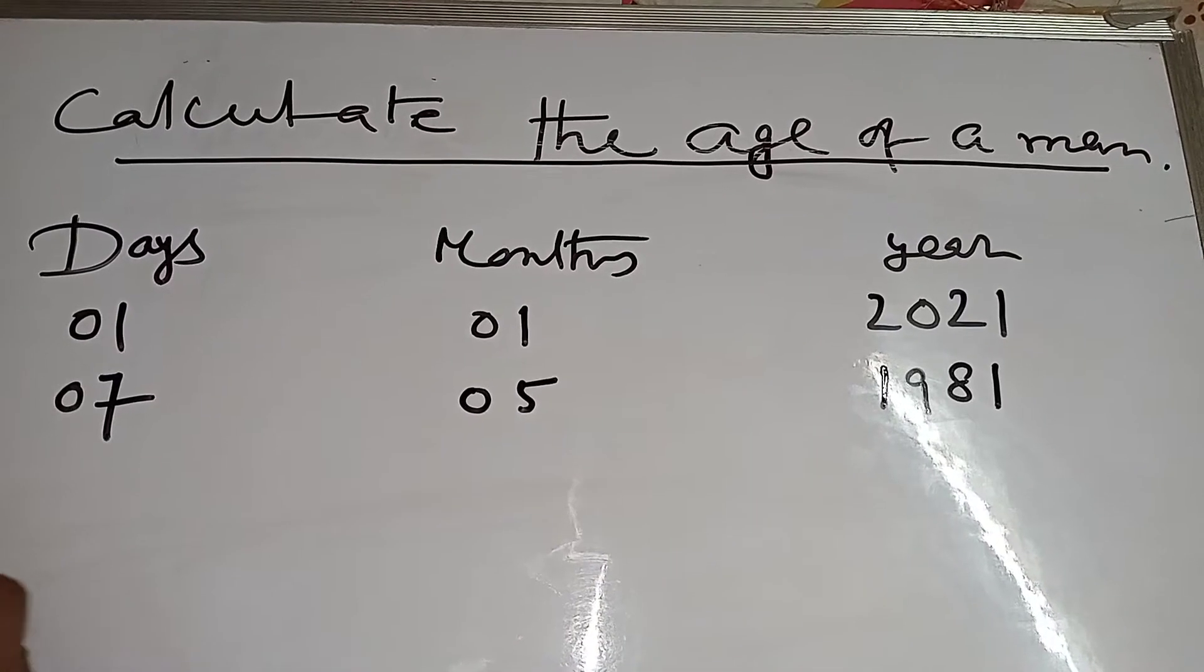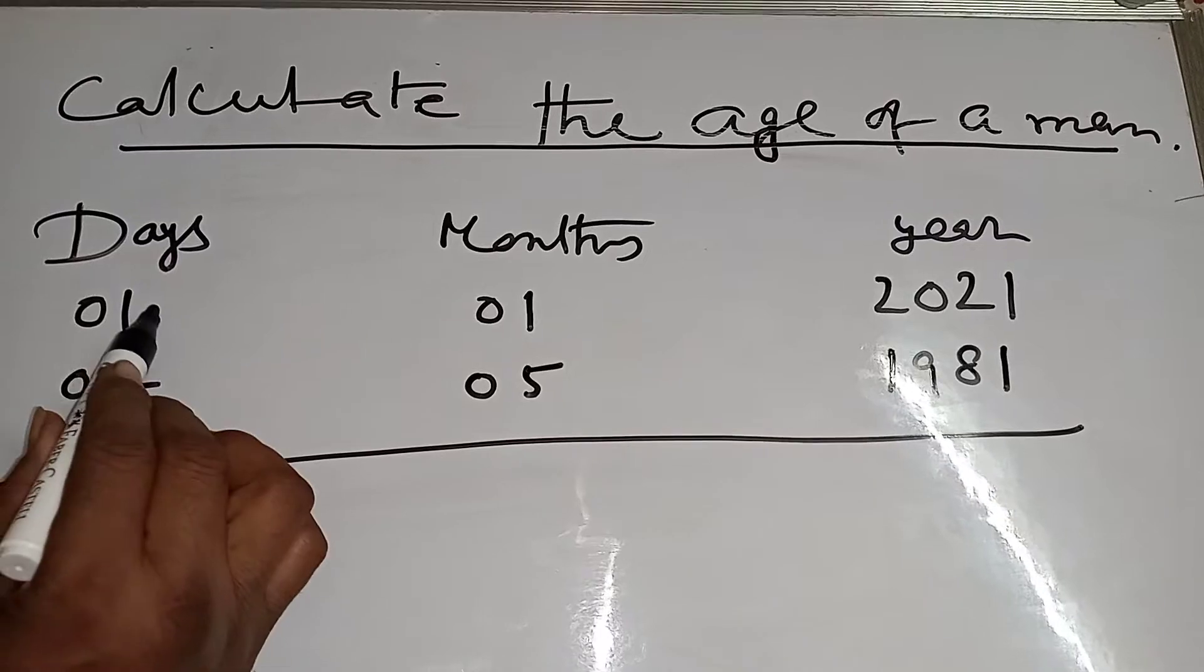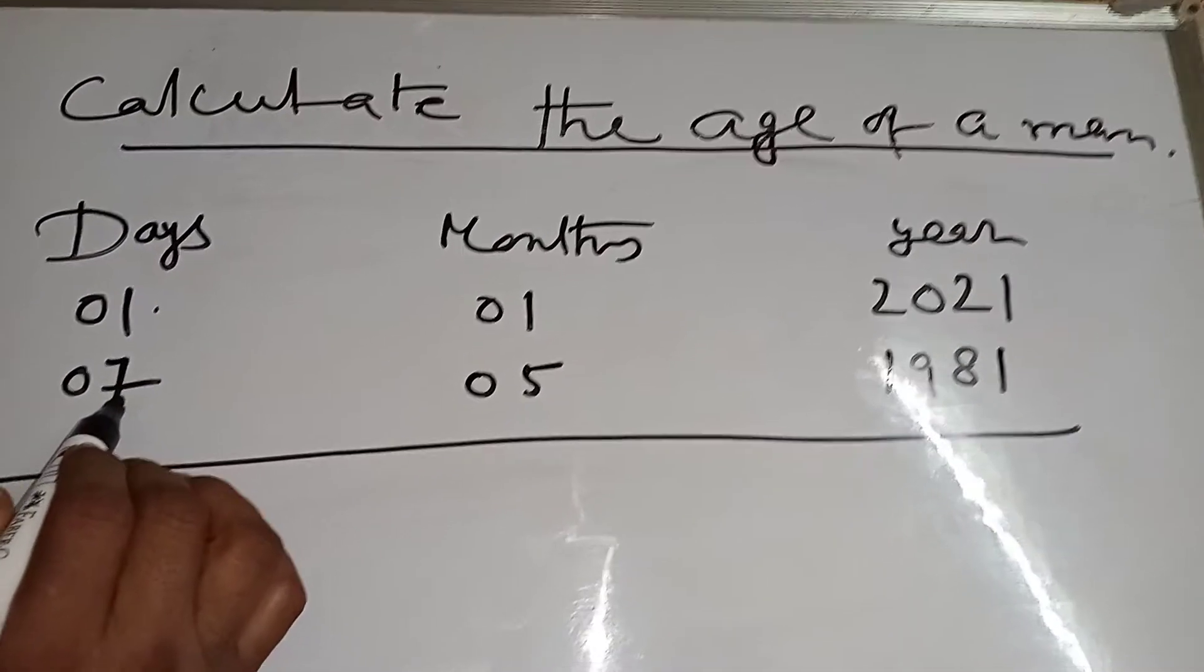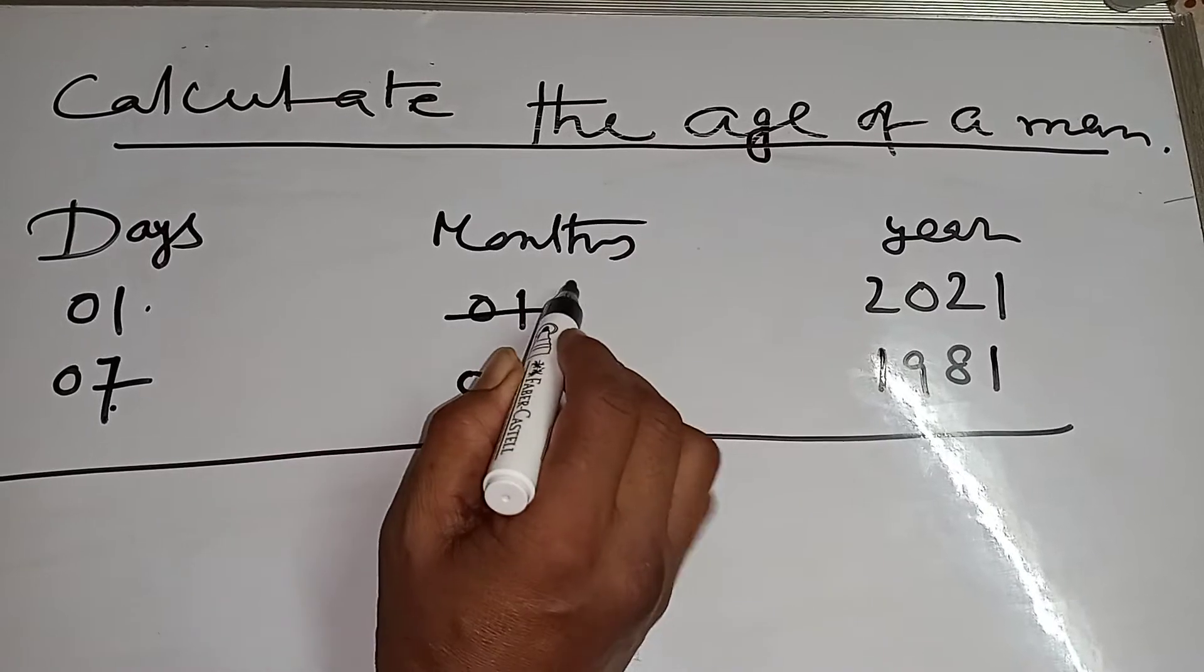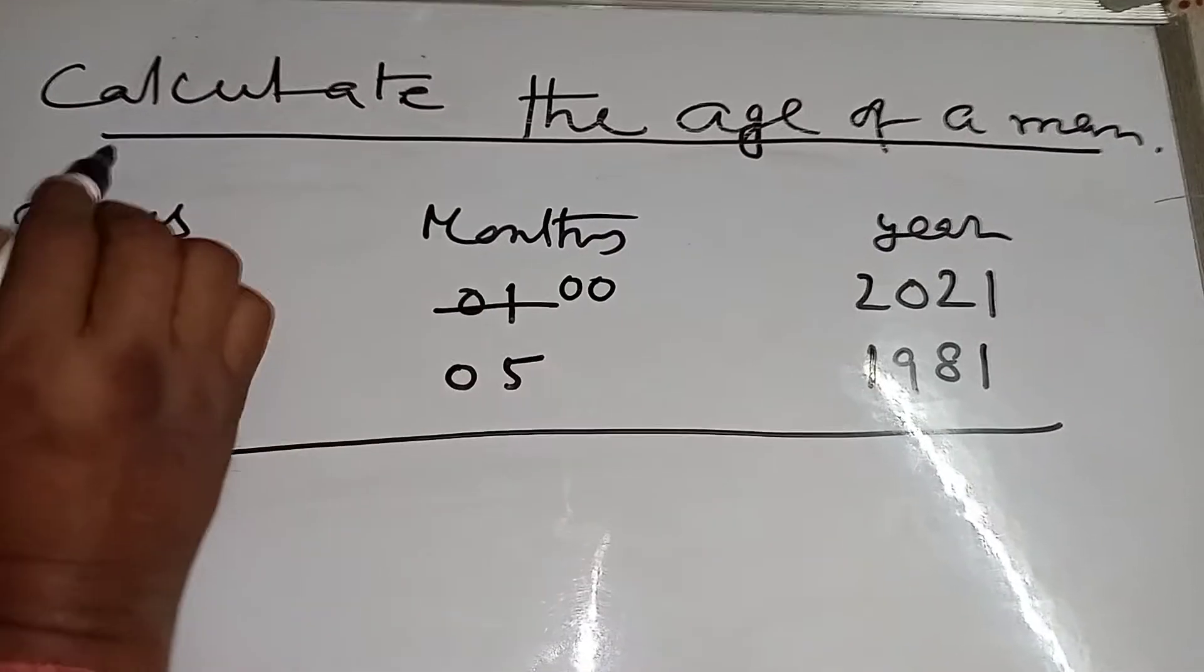Find the age of a man. Now subtract. From here to here, that means one day it is seven days. Now to carry one month, one month that means 30 days.